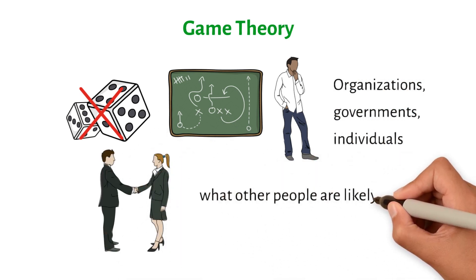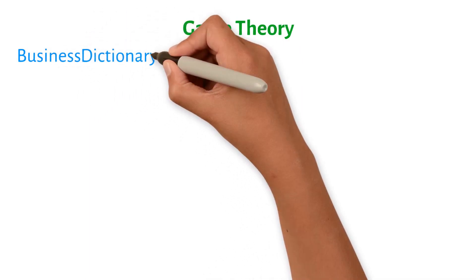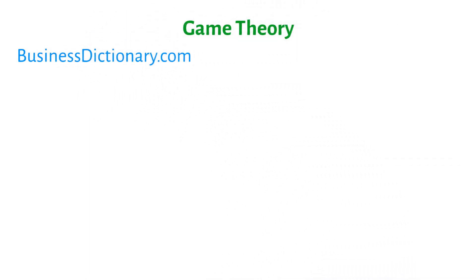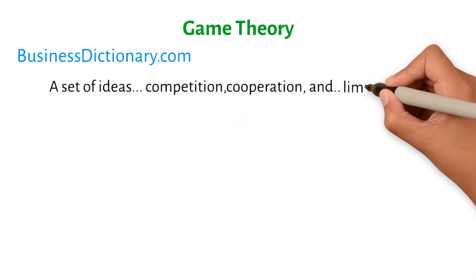When deciding what to do, they have to think about what other people are likely to do and how they might react to what they do. BusinessDictionary.com says game theory is a set of ideas meant to help people make decisions when they have to deal with competition, cooperation, and dependence within the limits of rules that have already been set.